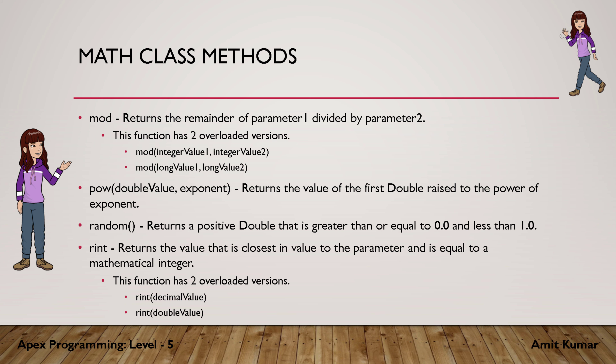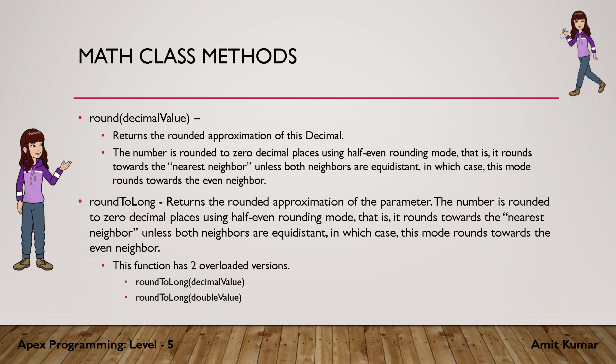The next two methods, round and roundToLong, are almost the same — both are used to round a decimal value. The difference is that round accepts only a decimal value whereas roundToLong can accept decimal as well as double. Also, round returns an integer whereas roundToLong returns a double. Both round on the basis of half-even rounding mode.